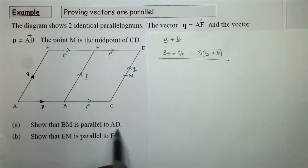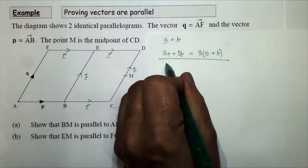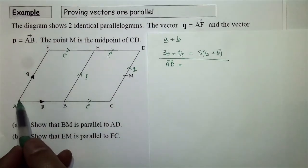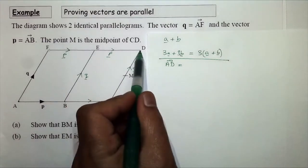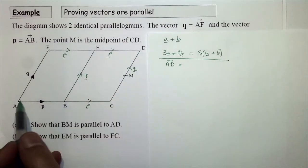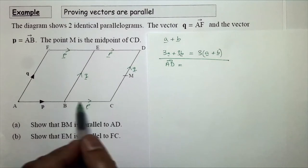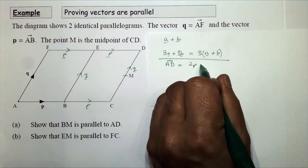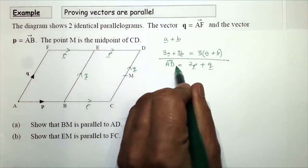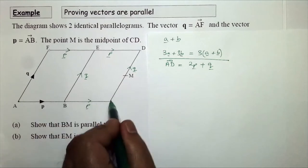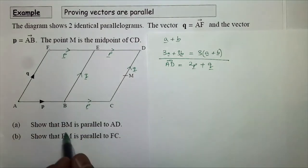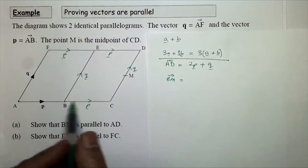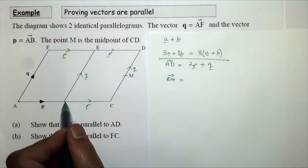To show the first part of the question, we need to show that BM is parallel to AD. Looking at AD first: AD, from A to D, is equal to q plus q, so AD equals 2p plus q.